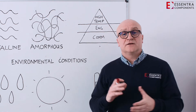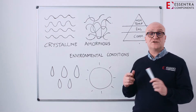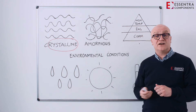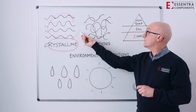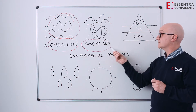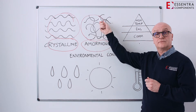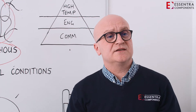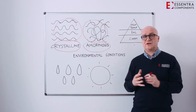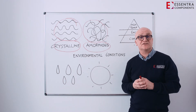So when we talk about materials, it's important to understand the molecular structures. The majority of the time, most materials fall into two types of structure: the first one being crystalline, which is very well ordered, whereas the second one is amorphous, which has a much more jumbled molecular structure. It's important to understand these two structures in the selection of materials and how they affect the final product.